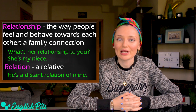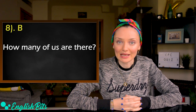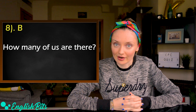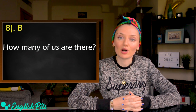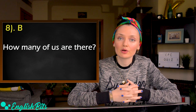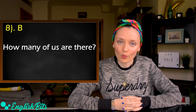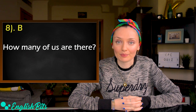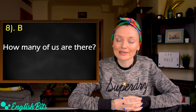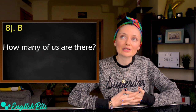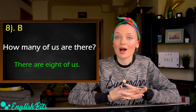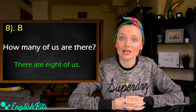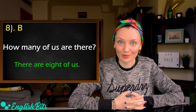Number eight — the correct answer is B: How many of us are there? When we talk about the number of people in a group, we say 'of us' or 'of them.' When we answer, it's 'There are eight of us.' It's not correct to say 'We're eight.' Be careful!